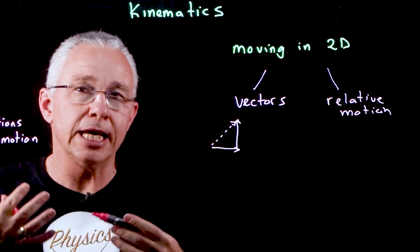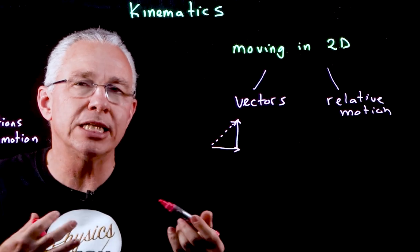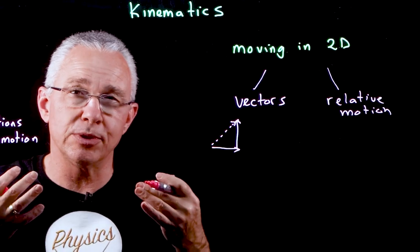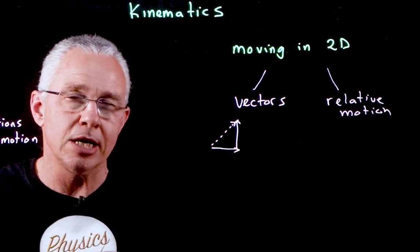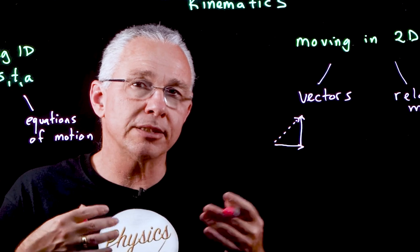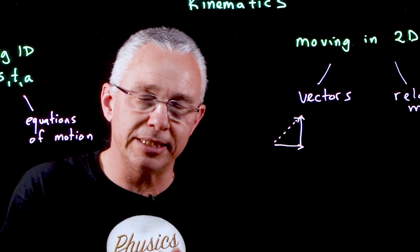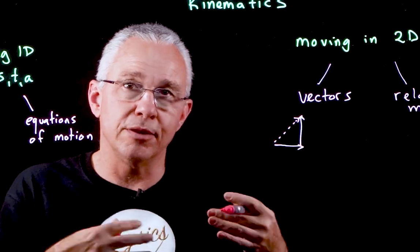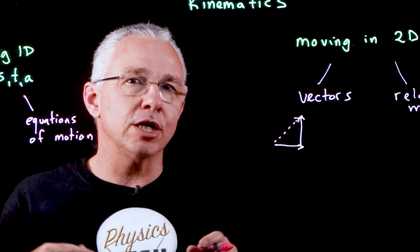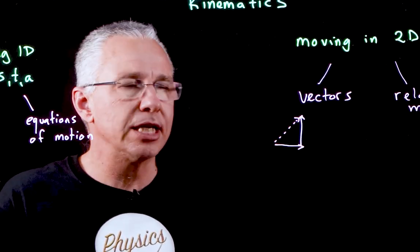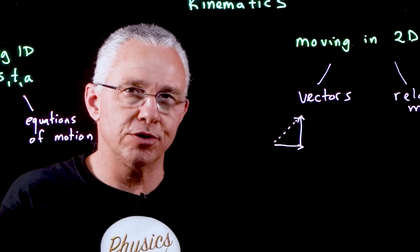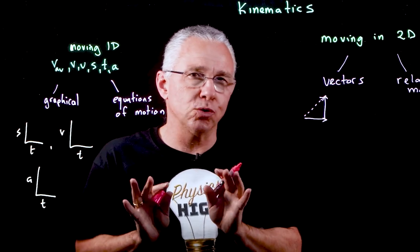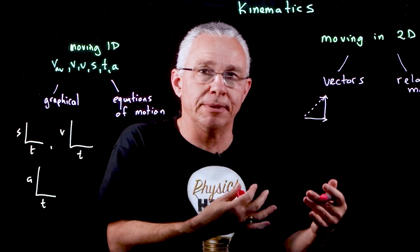Once we understand vectors, we can apply that understanding — along with the equations of motion or constant velocity — to what we refer to as relative motion. Relative motion is a very important underpinning for many aspects of physics: when we measure something, it is always measured relative to the observer. We look at simple constant-velocity situations and ask: if object A is moving with a particular velocity and direction, and object B has its own velocity relative to the stationary ground, what velocity does A observe of B, or vice versa?